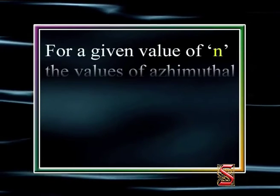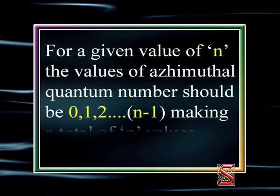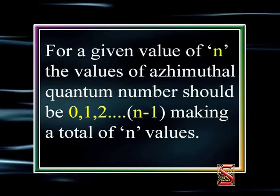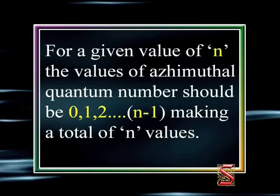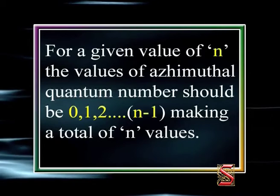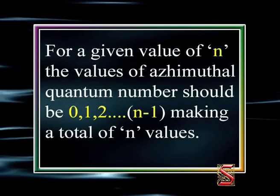Experimental evidence showed that the azimuthal quantum number begins with 0. Therefore, for a given value of N, the values of the azimuthal quantum number should be 0, 1, 2, and so on up to N−1, making a total of N possible values. To avoid confusion with Sommerfeld's original K, the new azimuthal quantum number is given the symbol L.